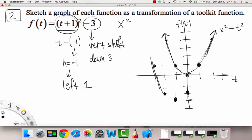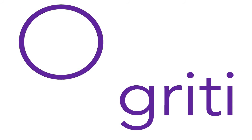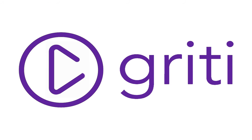Now our graph looks like this. It has the same shape because we didn't stretch or compress it or reflect it or anything. All we had to do was shift it in this case to the left 1 and down 3. This is our new f of t graph down here.